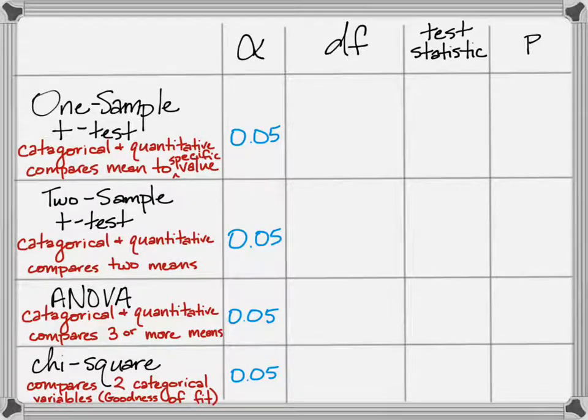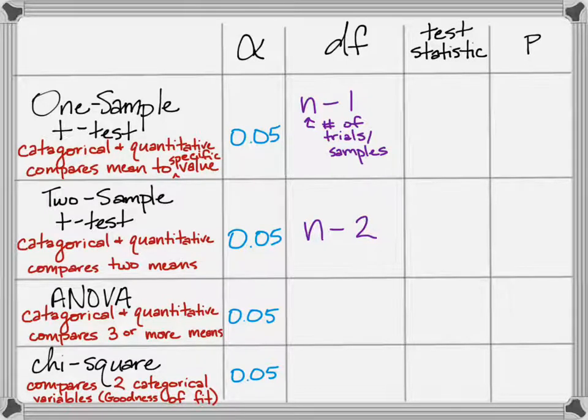Degrees of freedom is used to find the critical value of your test statistic. That is going to be n minus 1 for a one-sample t-test, where n is your number of trials, repeated trials are basically how many samples you're averaging. Degrees of freedom for a two-sample is n minus 2.